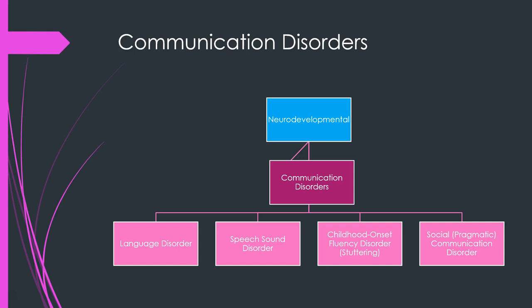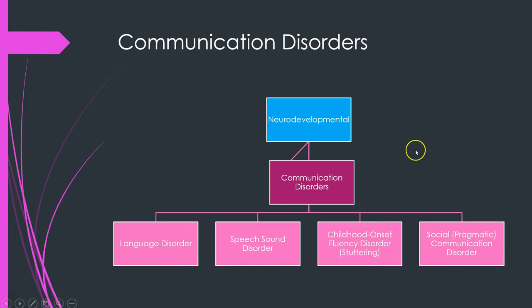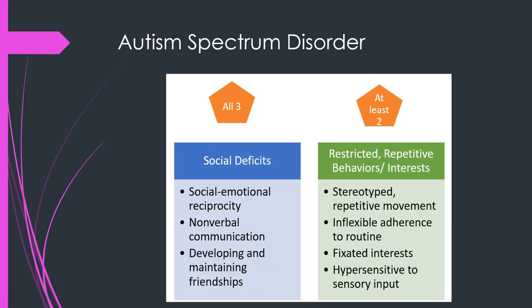There are a few different types of communication disorders as a subset of neurodevelopmental disorders. One to note is child onset fluency disorder, which is really just a fancy term for stuttering — it's helpful to be aware of that terminology.